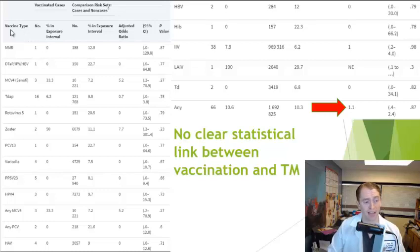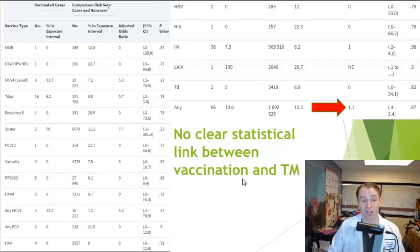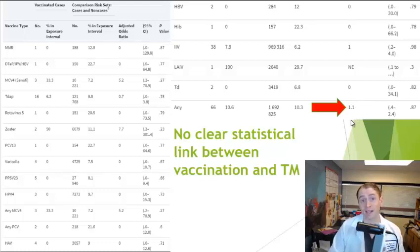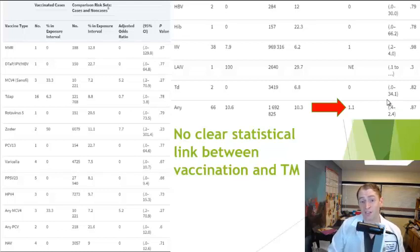This is a study looking at transverse myelitis after vaccination, showing different types of vaccinations and statistical modeling to assess whether the rate of transverse myelitis was higher after these vaccinations. Overall, the odds ratio was 1.1, meaning a 10% higher risk of transverse myelitis after vaccination, but this was not statistically significant, and there was no clear signal that any particular vaccine causes transverse myelitis, although it can be a cause in rare idiosyncratic cases.